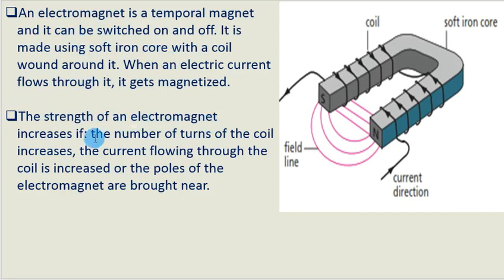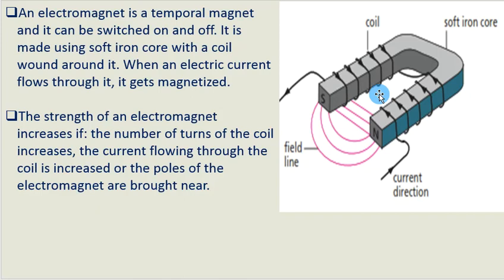The strength of an electromagnet increases if we do the following. One, if the number of turns of the coil increases — so if we increase the number of turns of the coil, the strength of the resulting electromagnet will increase. Another factor is increasing the current flowing through the coil, which can be done easily by increasing the voltage of the supply. Finally, if we make the poles closer to each other, then the strength of the electromagnet increases.